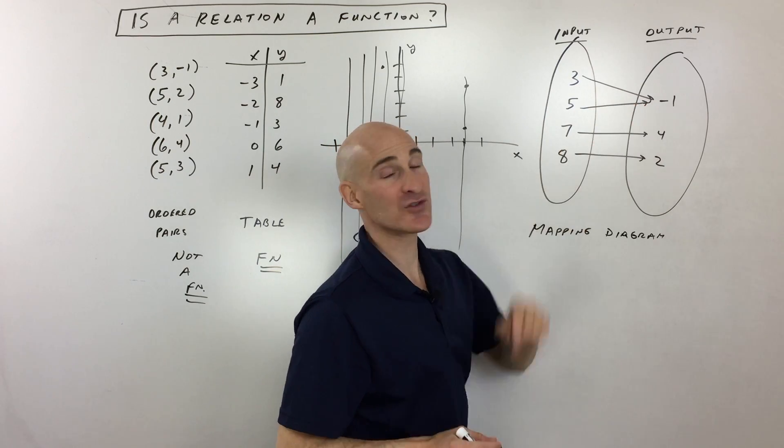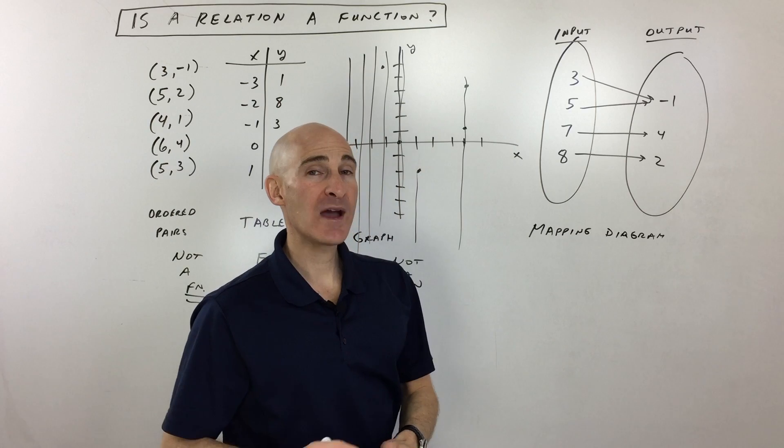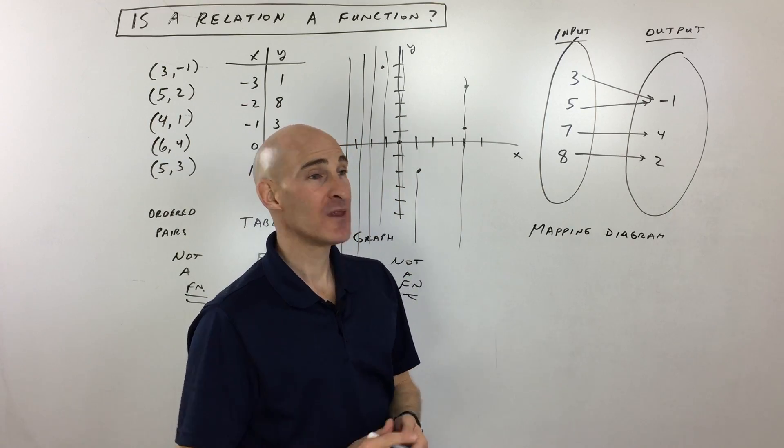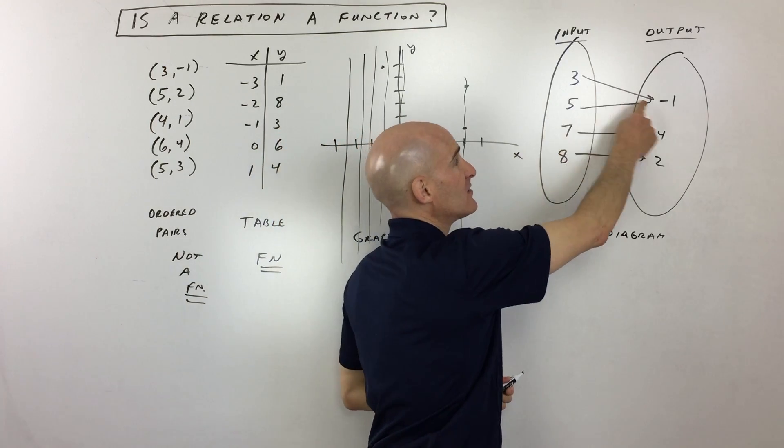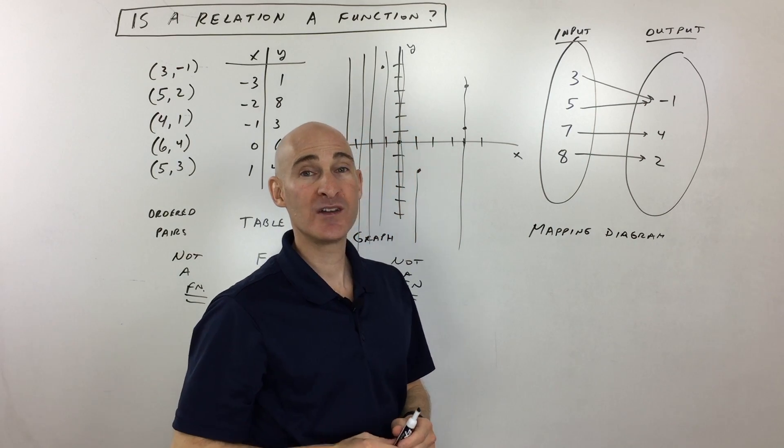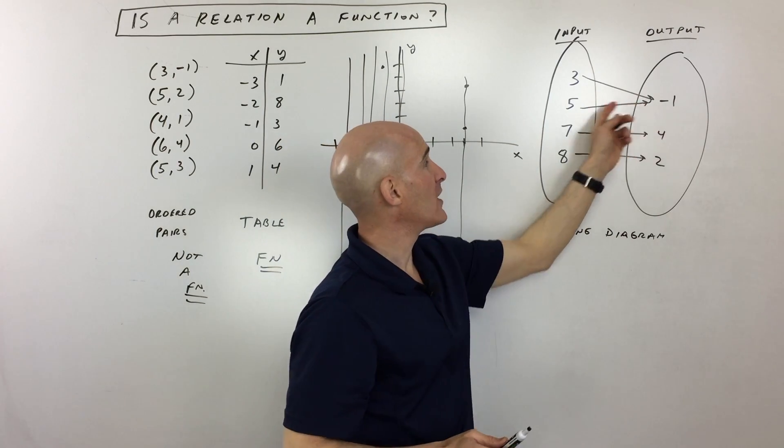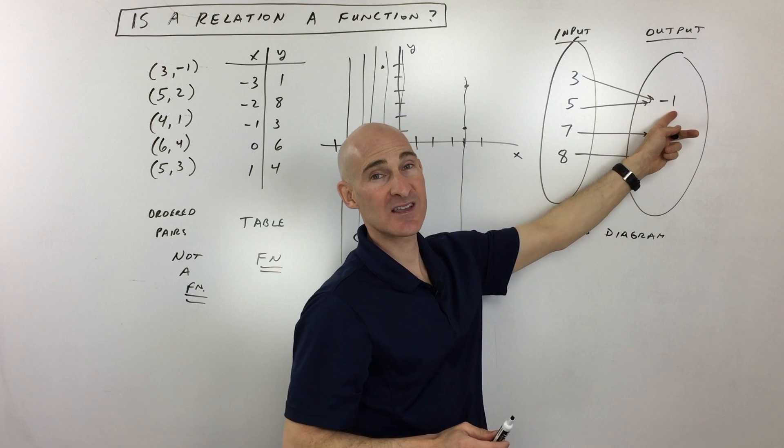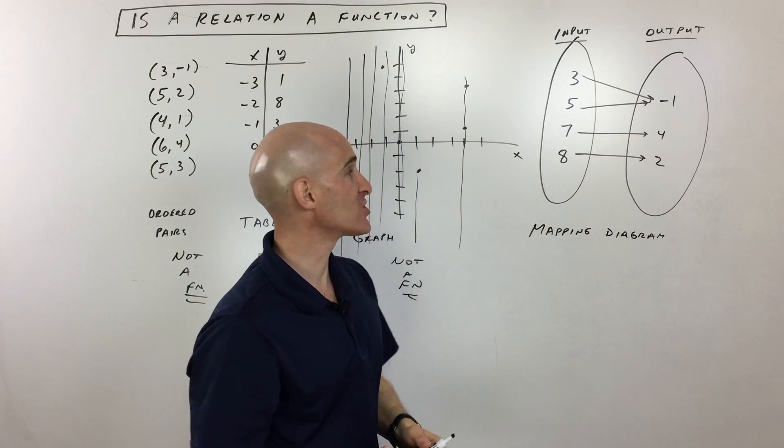Three goes to negative one, five goes to negative one. But again, if we go back to my vending machine example, if you push the button three, do you know what you're going to get for your output? Yes, you're going to get negative one. If you press five, do you know what you're going to get? Yes, negative one. That's okay. That's predictable. That's a function.